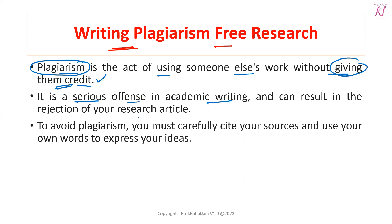Plagiarism is a very serious offense in academic writing and it can result in the rejection of your research articles. When an article is submitted for publishing in journals, they always check how much plagiarism content is there. They have set some limits — it can be 10 percent, 15 percent, 20 percent, or a maximum of 30 percent. If your content crosses that limit, your research article might get rejected.